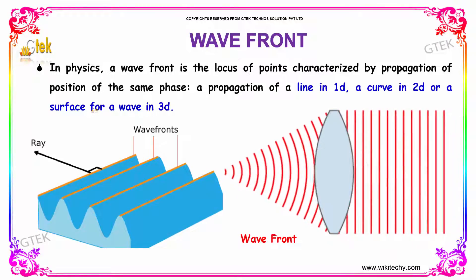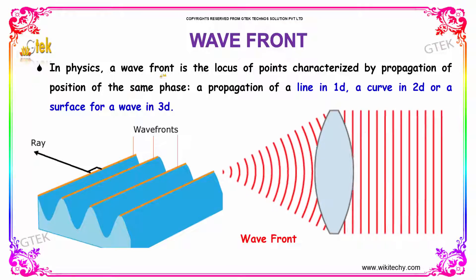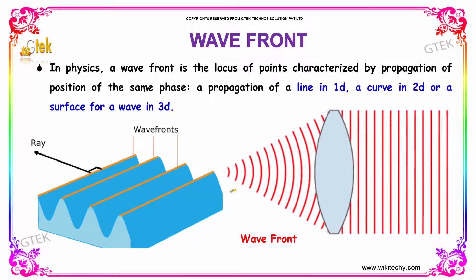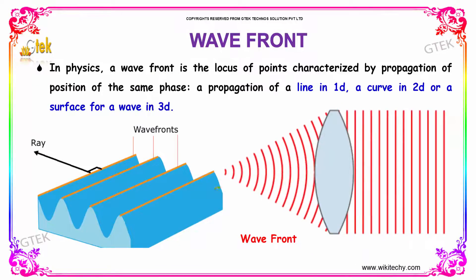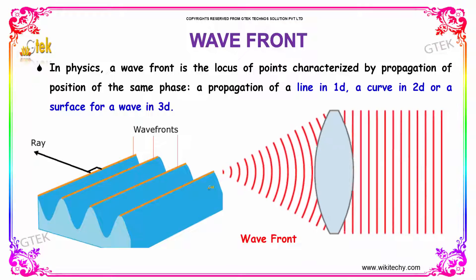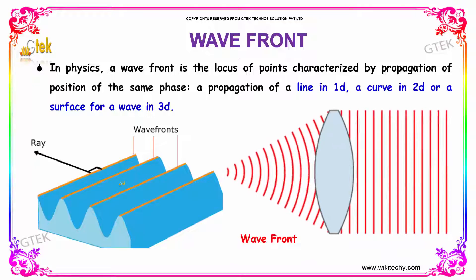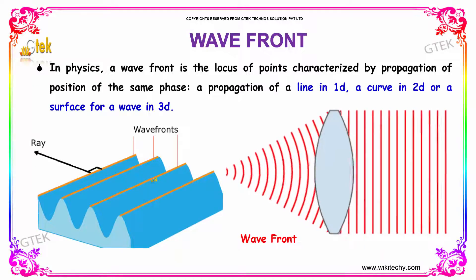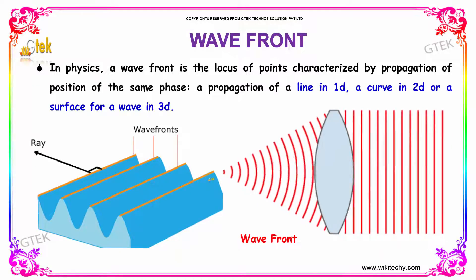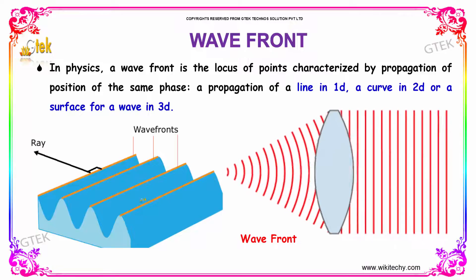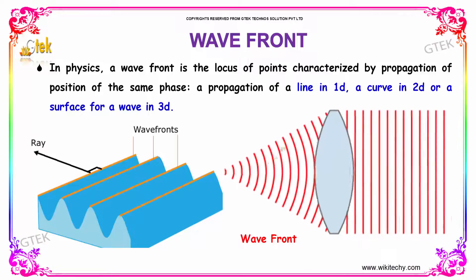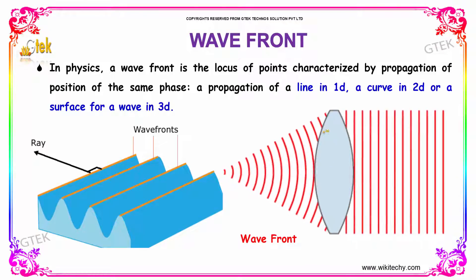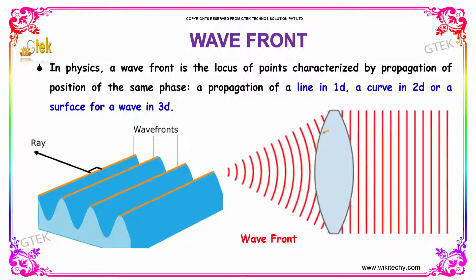In physics, your wavefront is the locus of points characterized by the propagation of the position on the same phase. A propagation of your line in one dimension, a curve in two-dimensional, or a surface for a wave in three-dimensional.